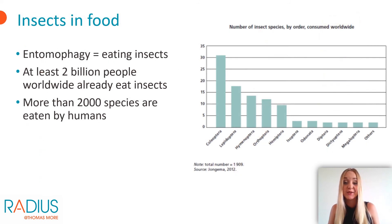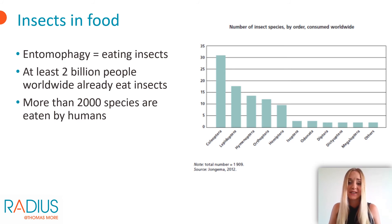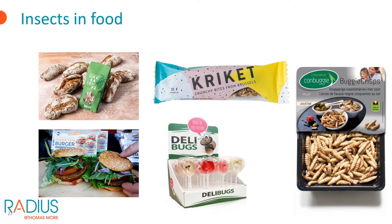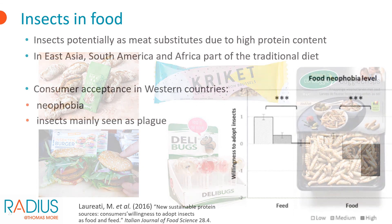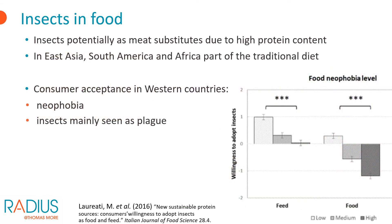The next application is the use of insects in human food. The word entomophagy means eating insects. At least 2 billion people around the world engage in entomophagy. In fact, more than 2,000 different insect species are eaten by humans, mainly beetle larvae, caterpillars, and so on. Here we see some examples of insect-based products: Finnish cricket bread, a German insect burger, a Belgian cricket bar, Dutch insect lollipops, and salted insect snacks. Insects have potential as meat substitutes because they are high in protein. In East Asia, South America, and Africa, insects are already part of the traditional diet.